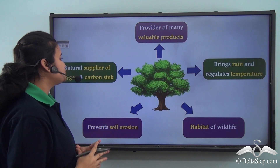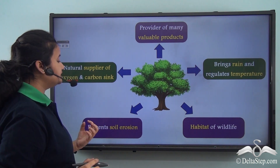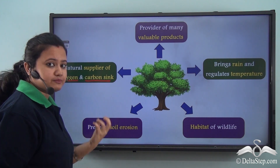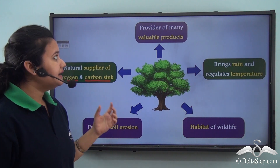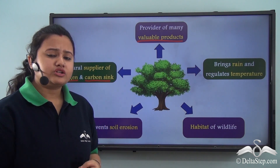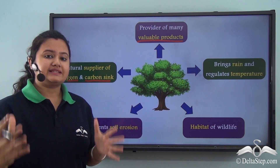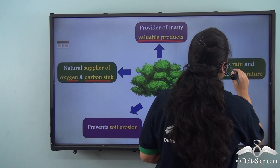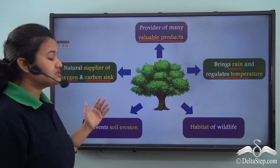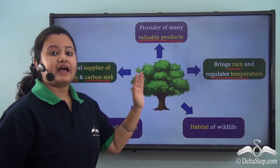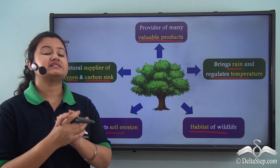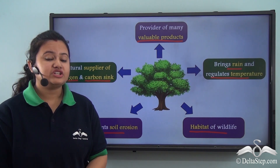Plants are quite valuable for us in numerous ways. Plants are the natural supplier of oxygen on earth and also act as a carbon sink - they give off oxygen and absorb carbon dioxide. Plants are also the provider of many valuable products like timber, cotton, paper, and rubber. Plants help in causing rainfall and regulate global temperature. Plants also prevent soil erosion and are the habitat of wildlife. Thus forest is a valuable natural resource and it is our duty to protect the natural vegetation of our country.